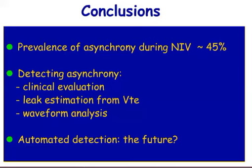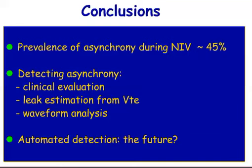To conclude: the prevalence of asynchrony during NIV is approximately 45%. Detecting asynchrony should rest on a triple approach of clinical evaluation, leak estimation from the inspired-to-expired tidal volume ratio, and waveform analysis. EMG cannot be recommended for the time being because there is no easy non-invasive method. Automated detection might be a helpful tool in the future, but we will still have to look at the patient and not rely solely on automatic detection. Thank you very much.